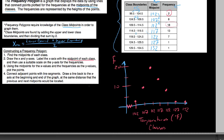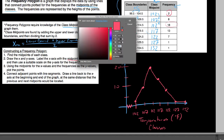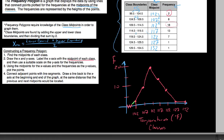Step four says: connect adjacent points with line segments — connecting each dot to the next across the graph. Then draw a line back to the x-axis at the beginning and end of the graph, at the same distance that the previous and next midpoints would be located. You connect down to an arbitrary point on the x-axis at each end, so it forms this polygon-like shape. The red graph is what we have data for, and then we connect it down to the x-axis at both ends.